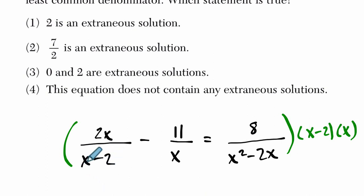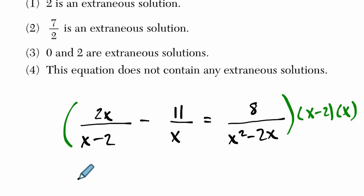And when we multiply that, in the first term, the x minus 2s cancel, and we're left with 2x times x. Then we're left with 11 times x minus 2. The x is canceled there. And finally, we're left with just 8 because x squared minus 2x cancels out with its factors here.